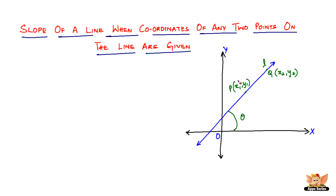Here is the diagram that we needed. The blue line is that line whose slope we are trying to find. We do not know the value of theta, but we do know two points — we have the coordinates of two points, P and Q, just any two random points on this line. It can be anywhere. They are shown here as green dots.